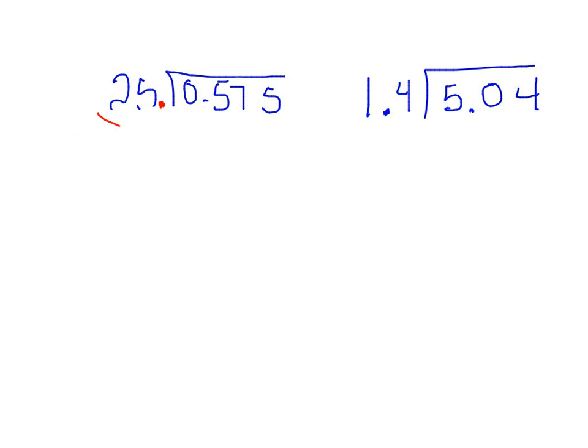Now, since I moved it twice right here, I come to the inside of the box, and I have to move it twice here as well, otherwise it's not even. So I do that, and then I move my decimal up.